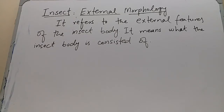A general insect body is divided into three main parts: head, thorax, and abdomen.